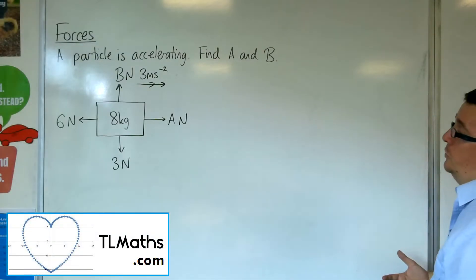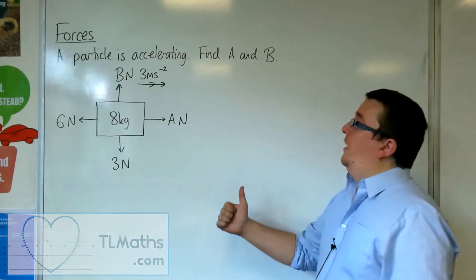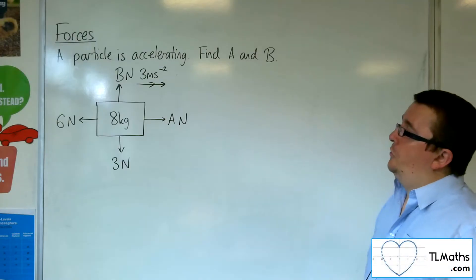In this video, we have a particle that is accelerating at 3 metres per second squared to the right. Find the values of A and B.